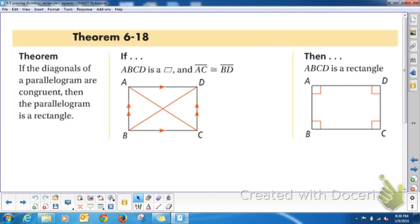Lastly, theorem 6-18: If the diagonals of a parallelogram are congruent, then that parallelogram is a rectangle. Because you know that's true of all rectangles. So because in this parallelogram ABCD, the diagonals are congruent, then I can say this is a rectangle.